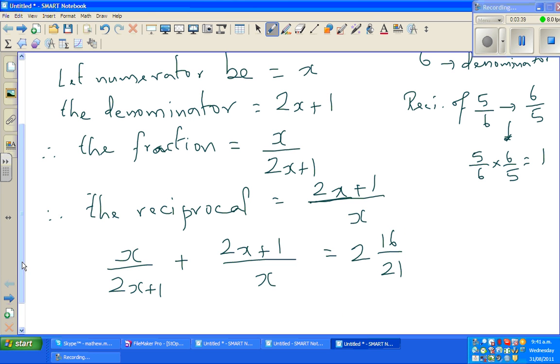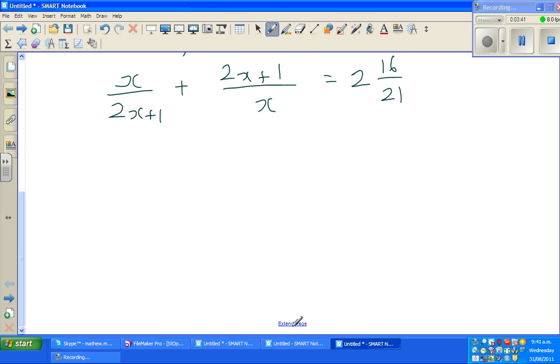Now you can do this indirectly, you can cross multiply, but it will become very difficult if you do like this. So I'm going to do a substitution. So I'm going to say let x over 2x plus 1 is m, which implies 2x plus 1 over x will become 1 over m.